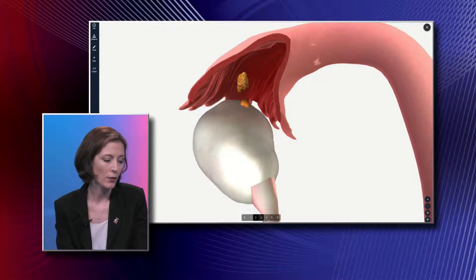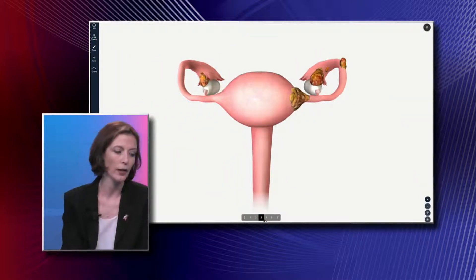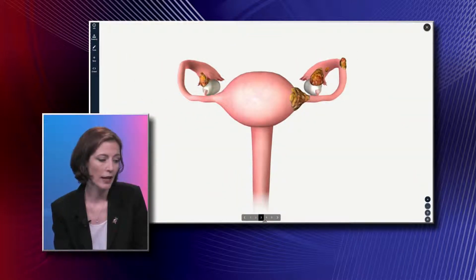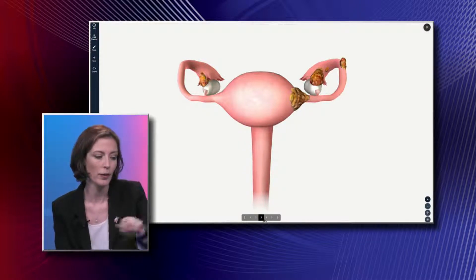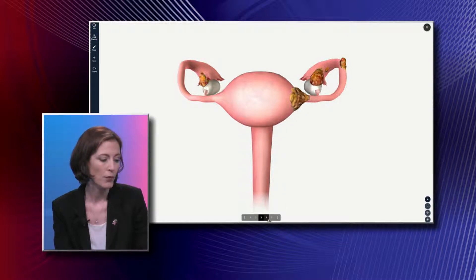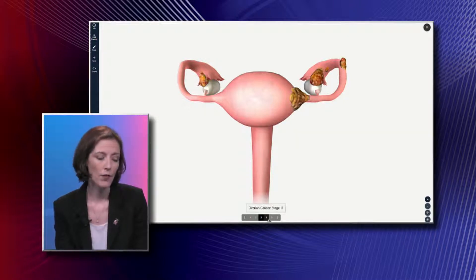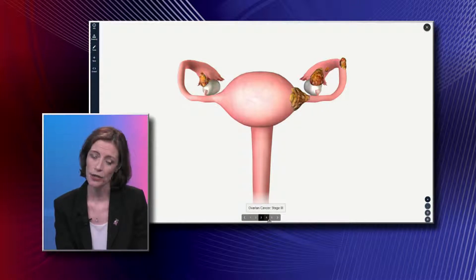A stage two cancer would be a little bit more advanced. You can see that it's now on both ovaries and extending into the fallopian tube — that's the little one up on the right-hand corner — and part of it can actually go into the uterus, which is that sac-like looking structure. We're seeing in this picture four tumors, but the amount of tumors doesn't really differentiate the stage; it's more about the location.